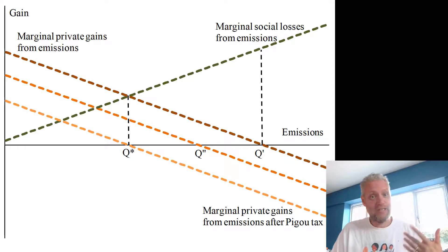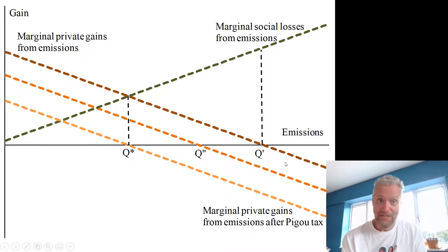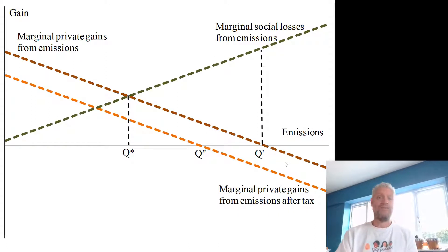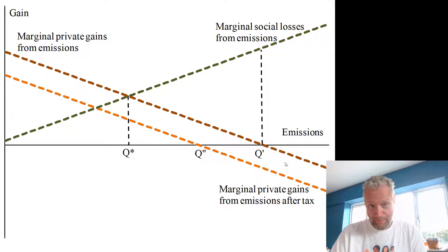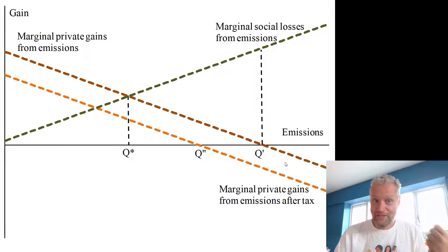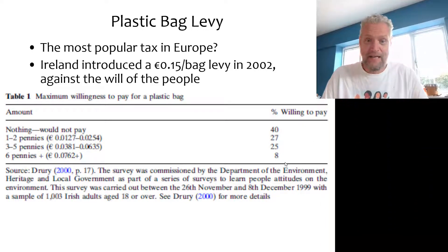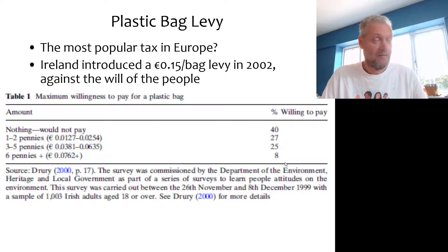The BGU tax is the one that exactly internalizes the externality. But for most environmental taxes, the legislator or regulator does not know exactly what the marginal social costs from emissions are, so an environmental tax A is imposed rather than the theoretically ideal tax D. I will compare taxes to subsidies, tradable permits, and direct regulation later. But first, let's look at the plastic bag levy in Ireland, which was dubbed the most popular tax in Europe.